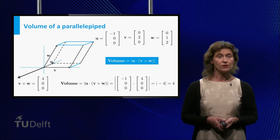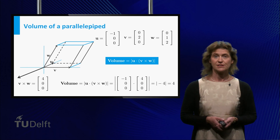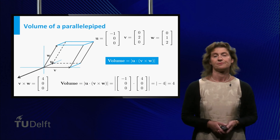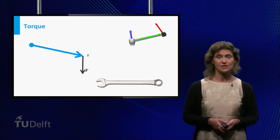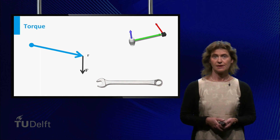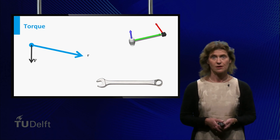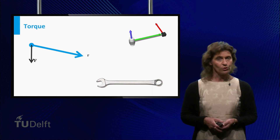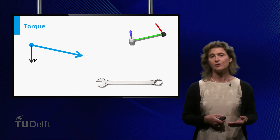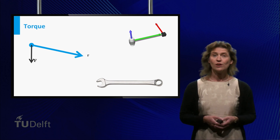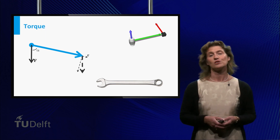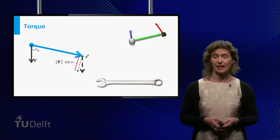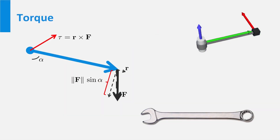Check for yourself that the order of the vectors u, v, and w in this formula may be interchanged without changing the outcome, as long as you use all three of them once. An application in physics of the cross product is torque. Let's look at the force F acting on a rigid body at a point with position vector r — for instance, applying a force to a wrench in order to tighten a bolt. The torque is defined as the vector describing the tendency of the body to rotate around the origin. The only component of F that can cause a rotation is the one perpendicular to r, that is the component with length sine of alpha times the magnitude of F. The direction of the torque indicates the axis of rotation.